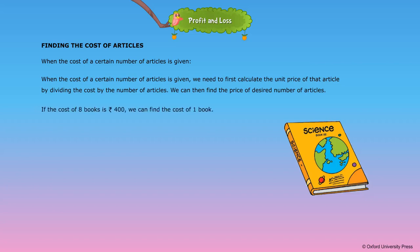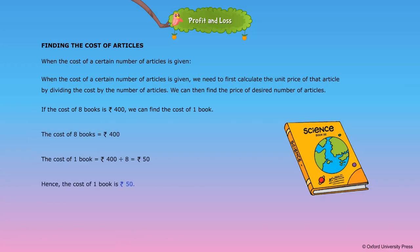For example, the cost of eight books is Rs. 400. Find the cost of one book. The cost of eight books is Rs. 400. The cost of one book is equal to Rs. 400 divided by 8, which equals Rs. 50. Hence, the cost of one book is Rs. 50.